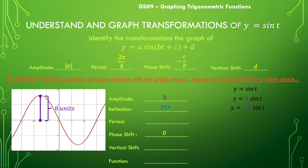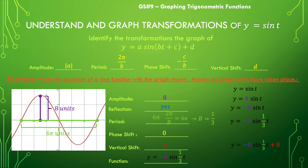For one complete cycle — one hill plus one valley — we can see that is 6π units long. So our period is 6π, which means we'll solve for b: 2π over b equals 6π, giving us b equals one third. We put that in the corresponding place. There's no vertical shift, so our function is y equals negative 8 sine of one-third t.